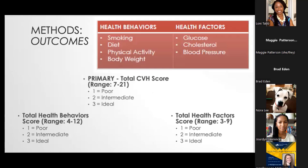In terms of the REGARDS study and how I measured different outcomes, the primary focus was the cardiovascular health score. Every participant had a score based on all the things the American Heart Association says we need to care about, broken into two types: health behaviors — smoking, eating habits, physical activity, and weight — and health factors, which are biological metrics: glucose, cholesterol, and blood pressure. The higher the score, the more ideal their cardiovascular health.